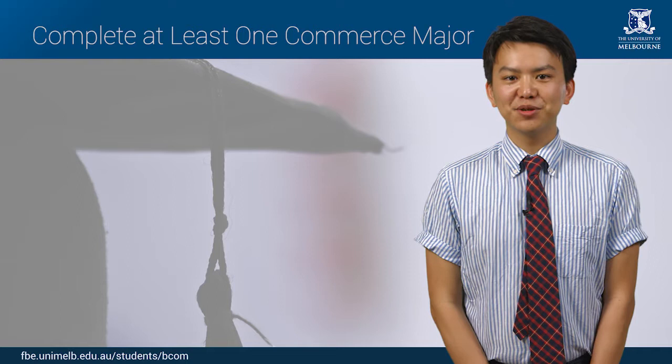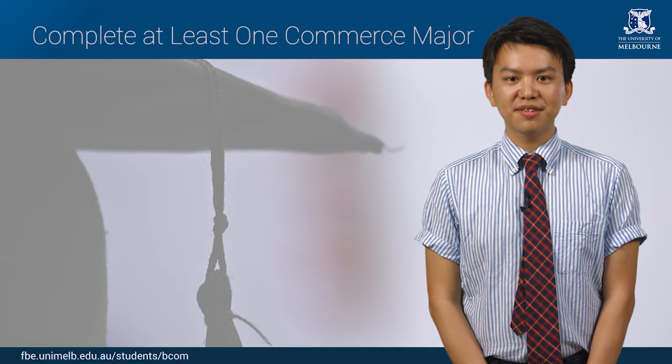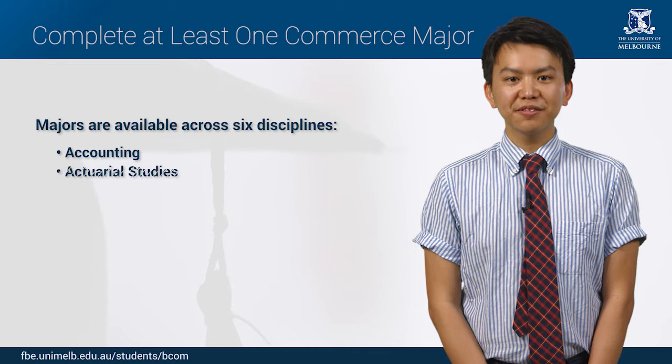A large part of your BCom is studying subjects that will lead towards your chosen major. A major is a sequence of subjects in a particular discipline that will take you from an introductory level through to an advanced level. You must complete three specified level three subjects to complete a major, generally taken in your final year. Majors are available across six disciplines: accounting, actuarial studies, economics, finance, management, and marketing.